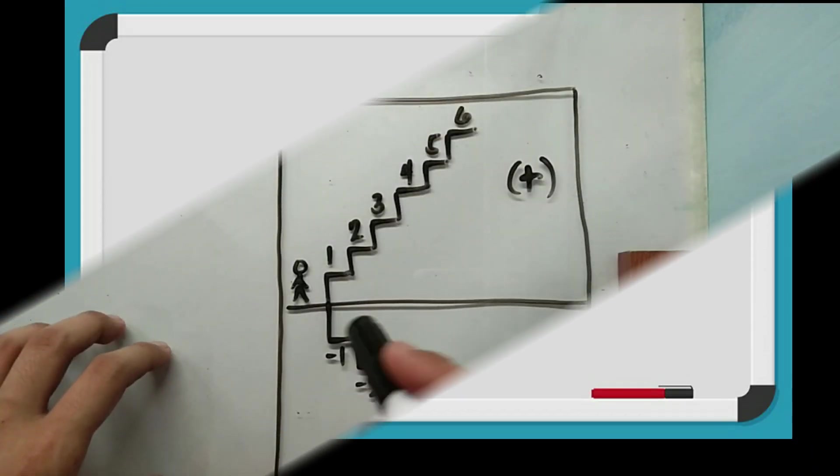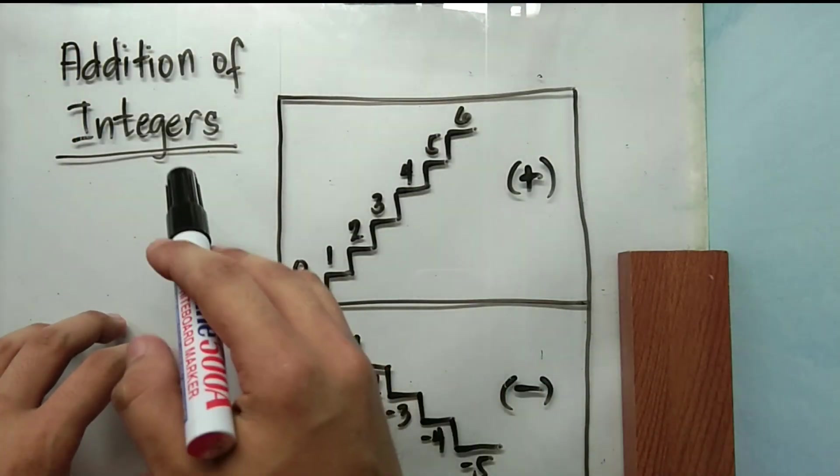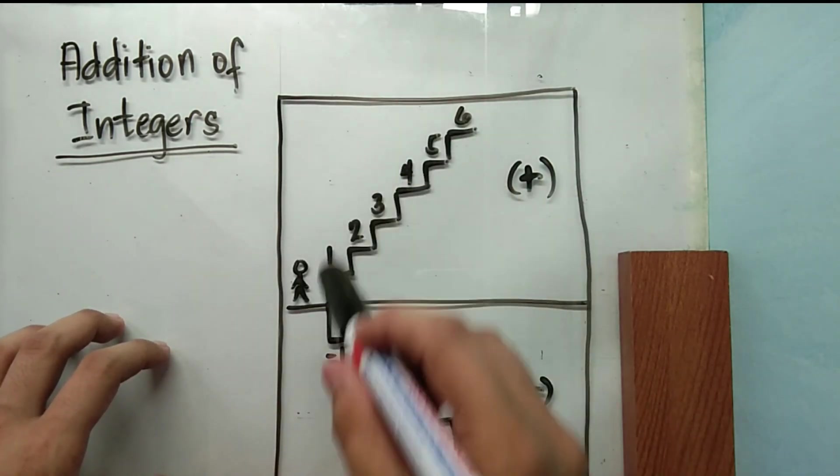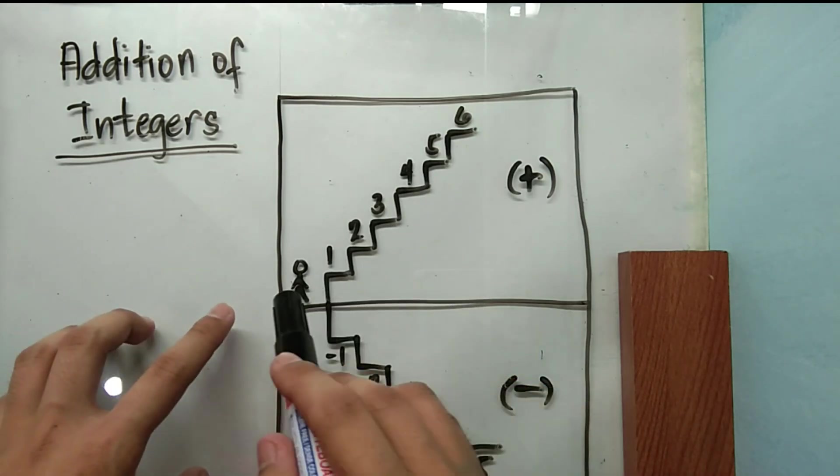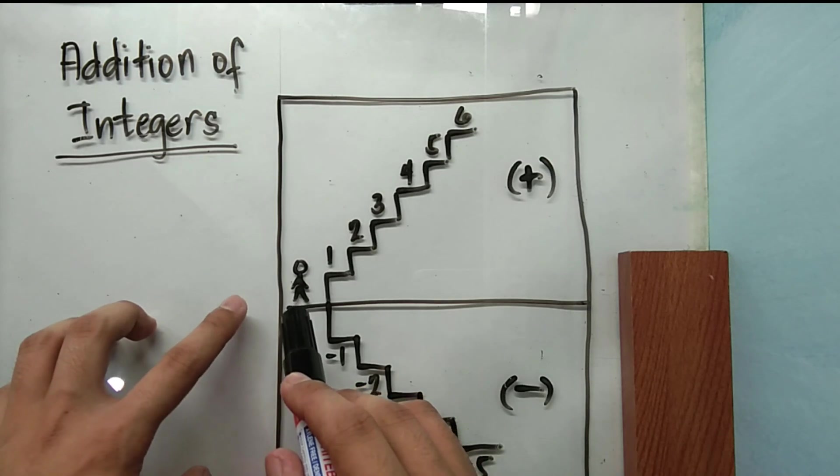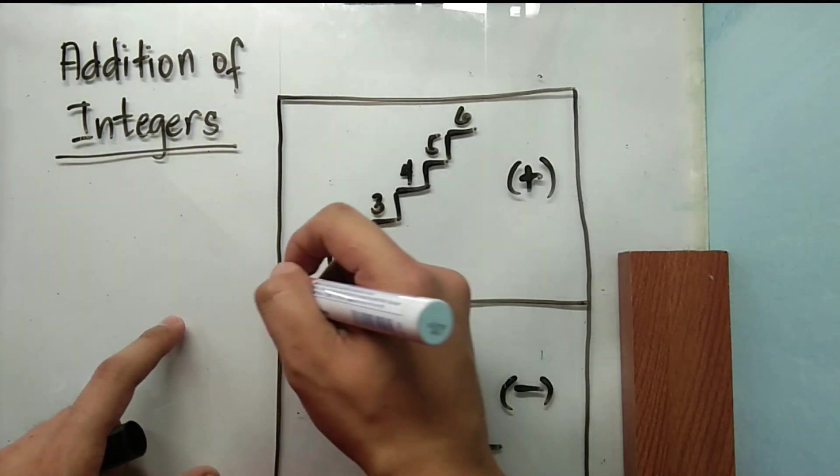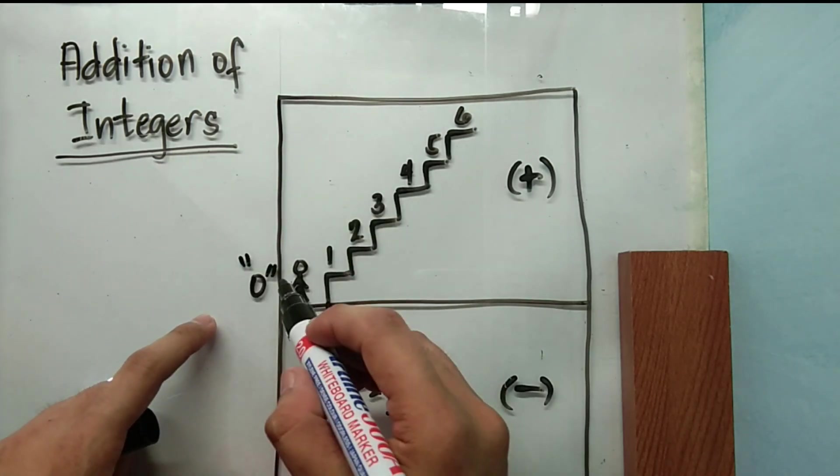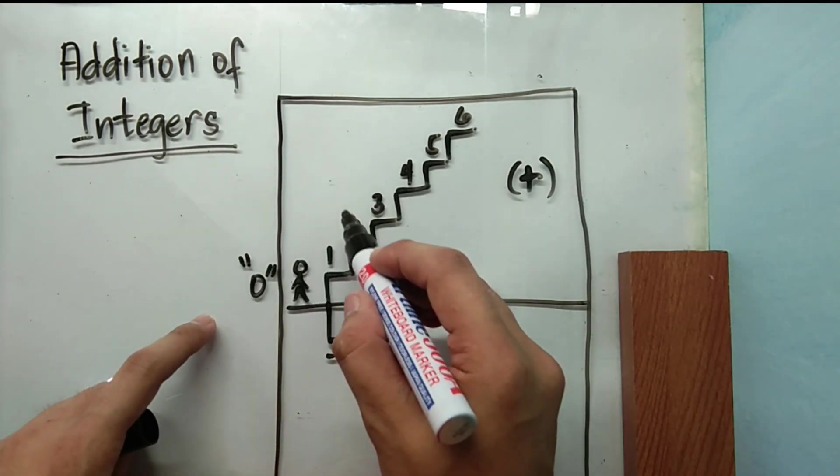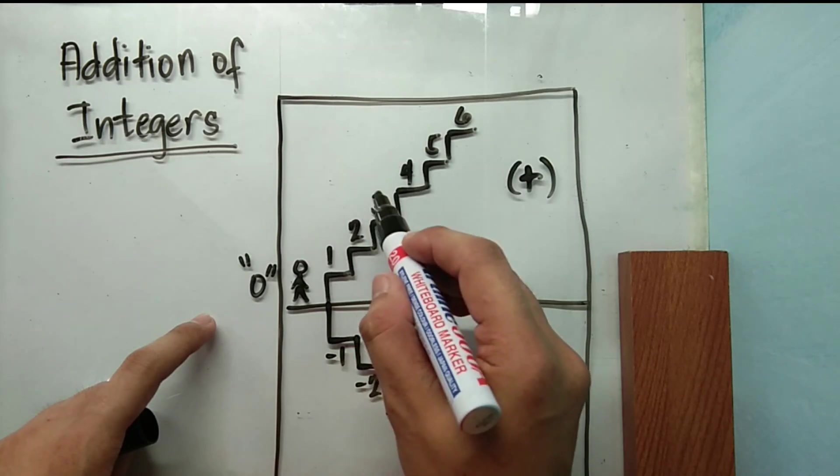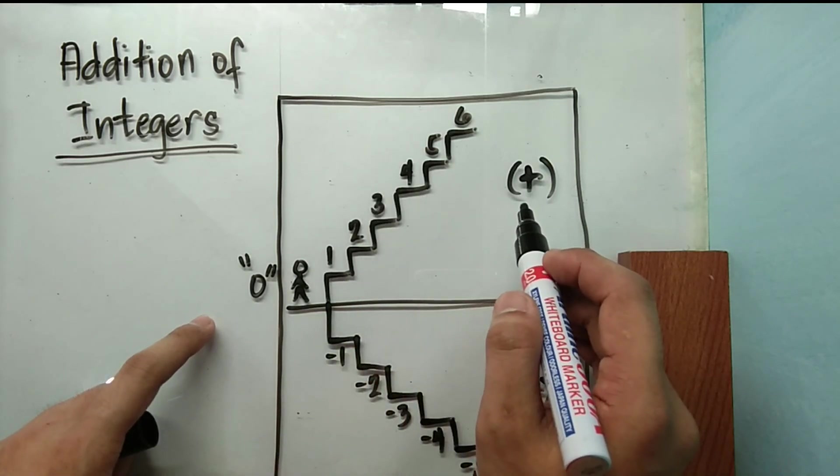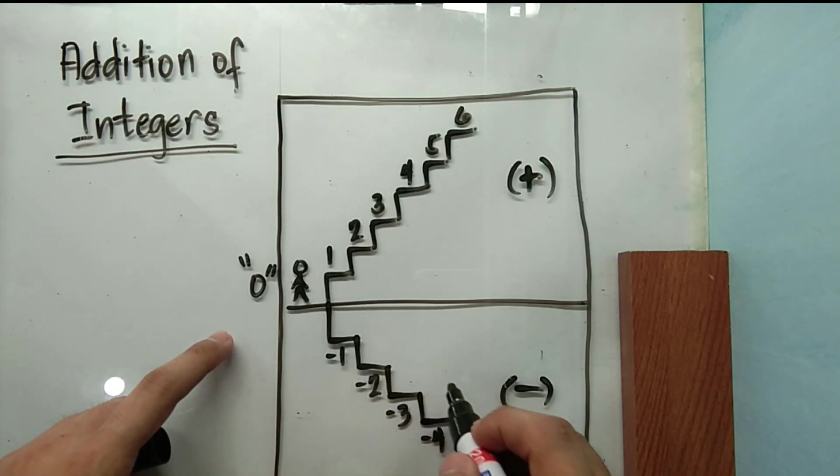Now to better understand the concept of addition of integers, I want you to imagine yourself in the middle of a building. The place where you are standing is your reference position, which may imply zero. Whenever you want to walk upstairs, each step will be represented as positive integers. Conversely, downstairs are the negative ones.